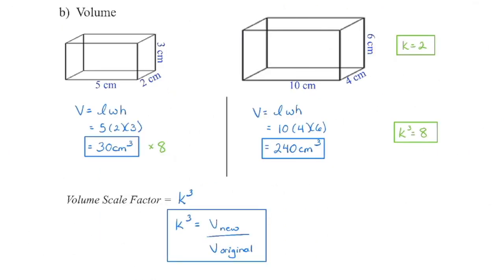The units are going to give you a clue. Think cubic units for volume — k cubed is our volume scale factor. And we can get that value by taking the new volume and dividing by the original volume. The units are the same, so they're going to cancel out, and that's going to give us the value of our volume scale factor.